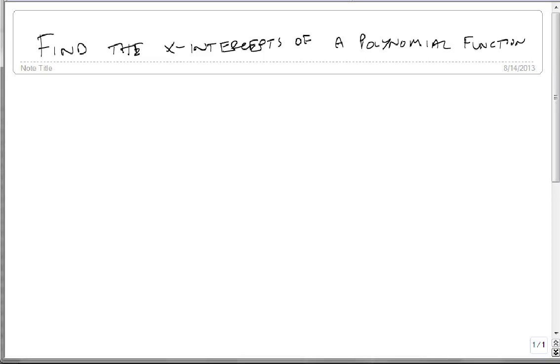Let's talk about the x-intercepts of a polynomial function. Remember that the x-intercepts of any graph is when y equals 0. And since we're talking about functions, this specifically means when f of x equals 0.